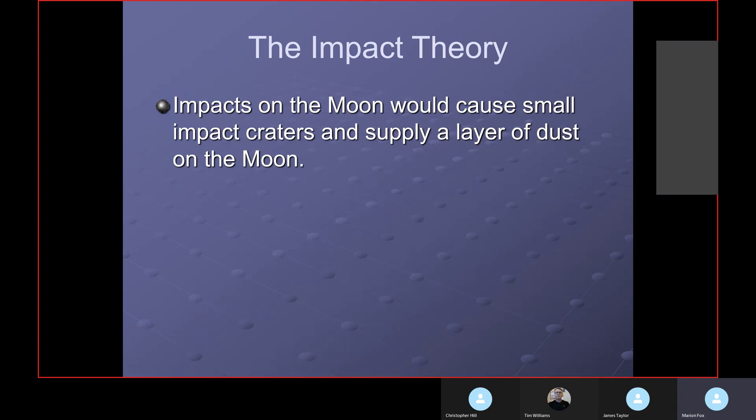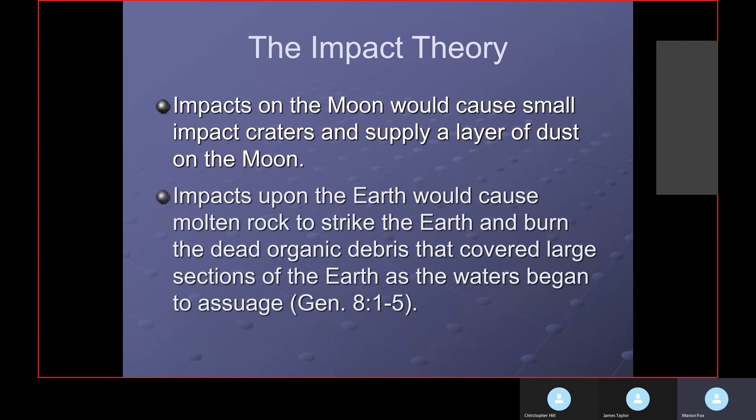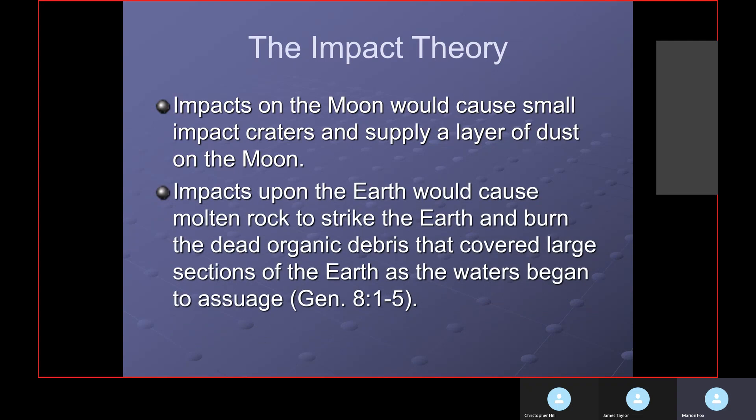Impacts on the Moon would cause small impact craters and supply a layer of dust on the Moon. What they do is they look at the number of impacts right now and then they project that backwards with uniformitarian assumptions. We keep coming back to they project with uniformitarianism, they make uniformitarian assumptions. They're not consistent. Atheism is not consistent to begin with. The impacts on the Moon would cause impact craters and supply a layer of dust on the Moon as well, making dating by dust or impact craters just impossible because you can't do it with uniformitarian assumptions. Impacts on the Earth would cause molten rock to strike the Earth and burn the dead organic debris that covered large sections of the Earth as the water began to assuage or to decrease.